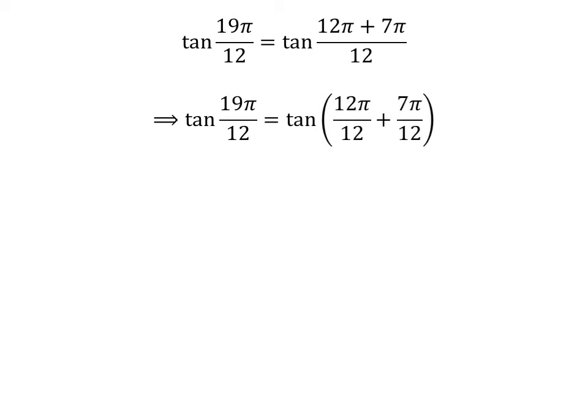The fraction can be expressed as a sum of two fractions. So tangent of 19 times pi upon 12 is equal to tangent of 12 times pi upon 12 plus 7 times pi upon 12. Cancelling out the common factor in the numerator and denominator gives us tangent of 19 times pi upon 12 is equal to tangent of pi plus 7 times pi upon 12.